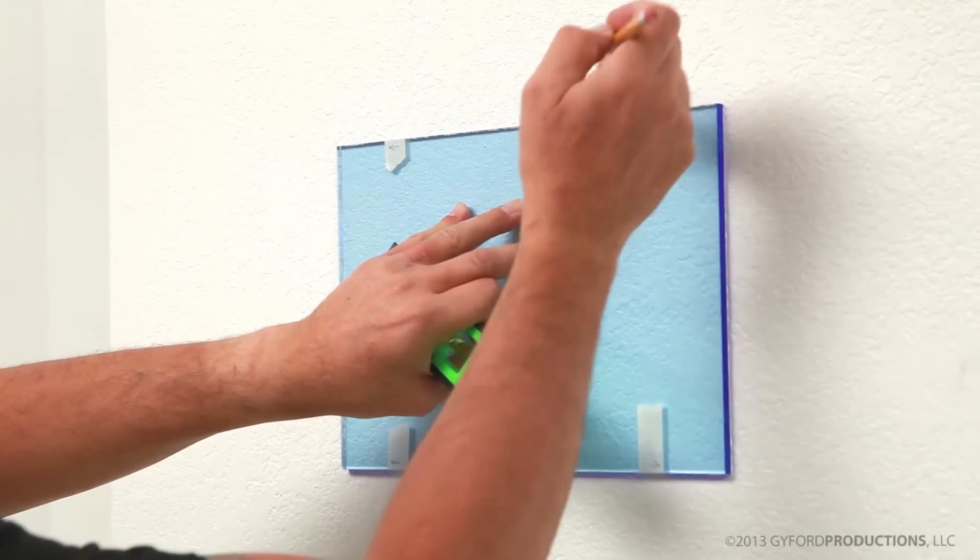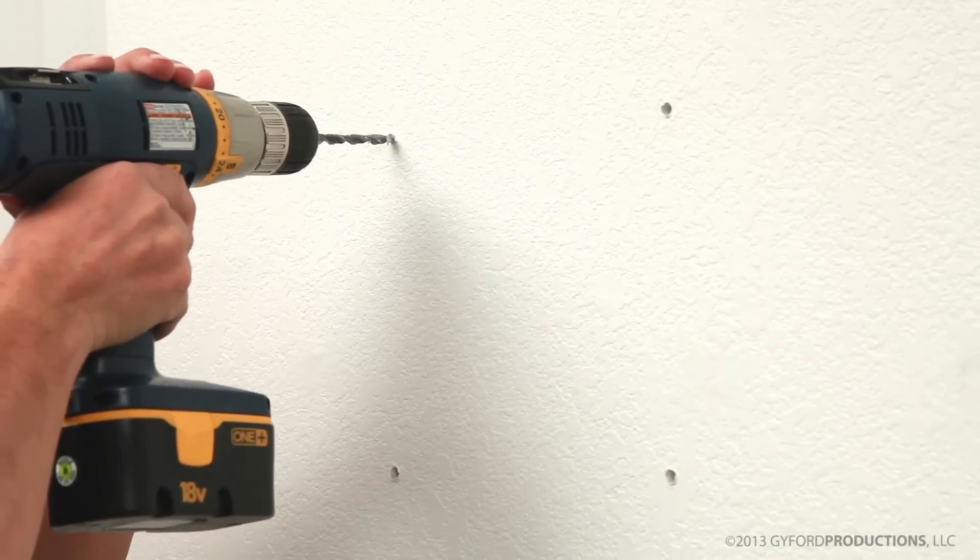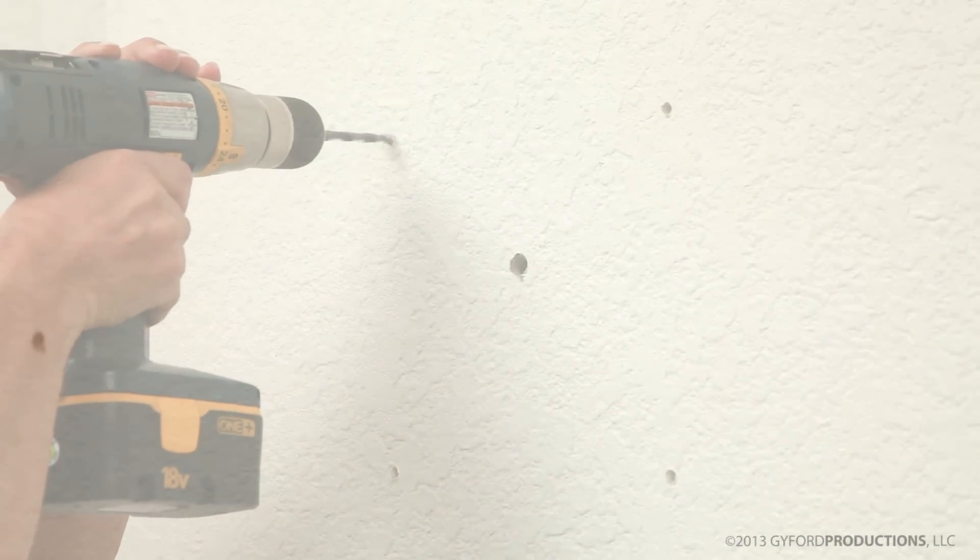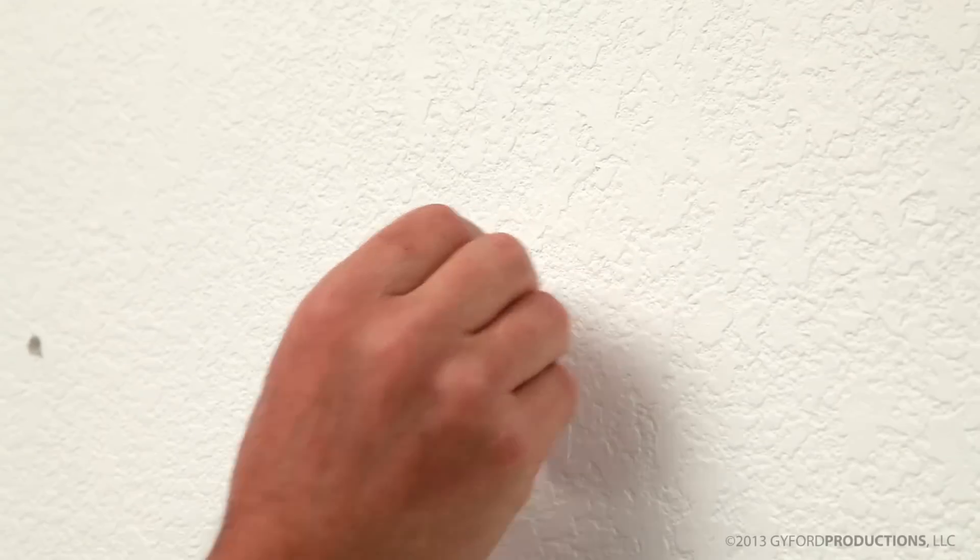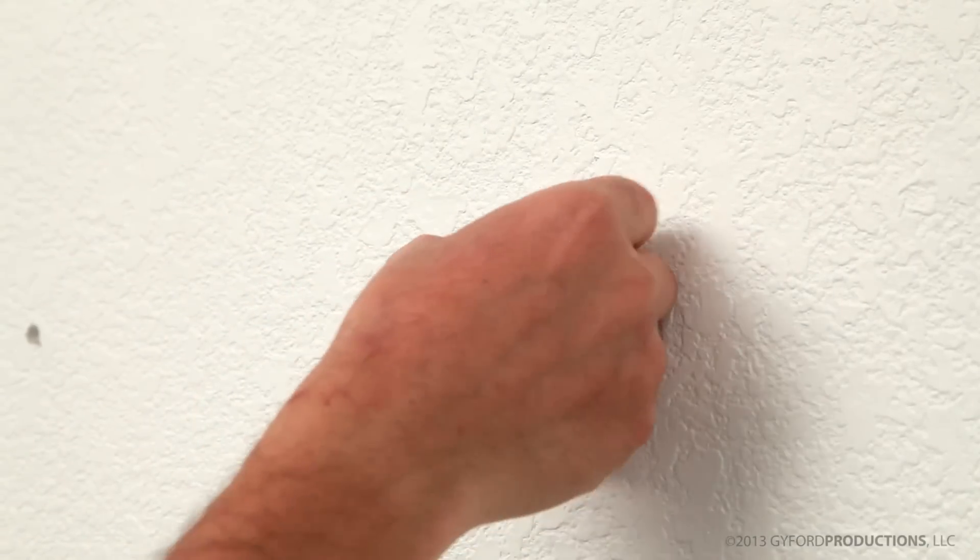Drill a quarter inch hole for the white nylon anchors we'll be using in this hollow wall. We have several anchors available for almost any application such as solid walls or masonry. With these just push or tap them flush into the wall.